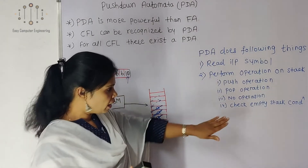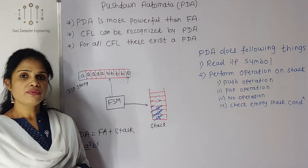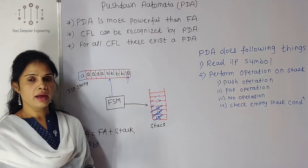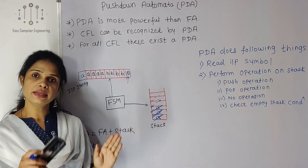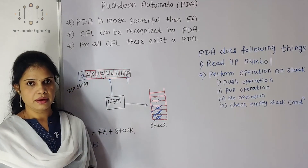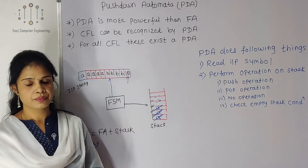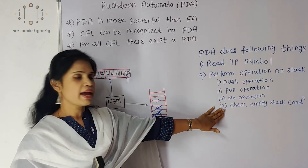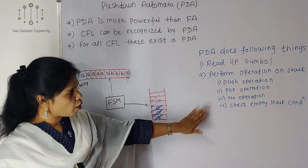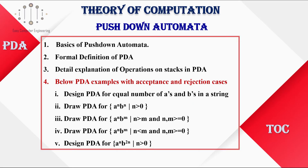Another operation is NOP (no operation) — in some cases we are just reading the stack content without modifying it. And one more important thing is the empty stack condition: if we reach the end of the string and the stack is also empty, that means the string is accepted — it follows the given context-free language. These are the operations that take place in a pushdown automata.